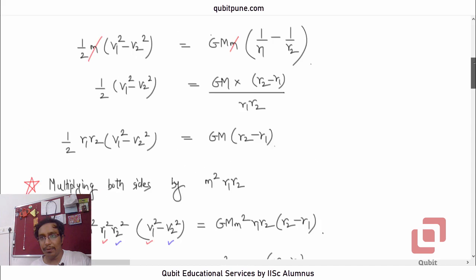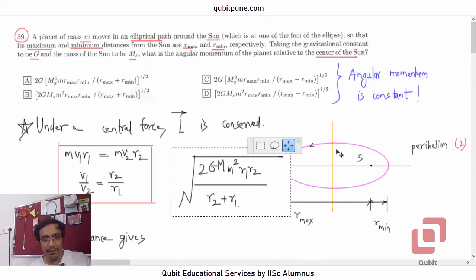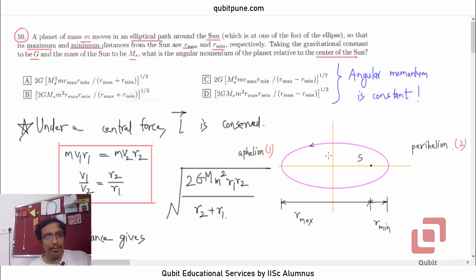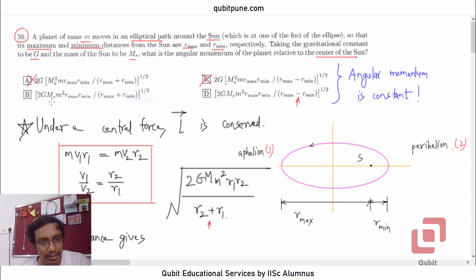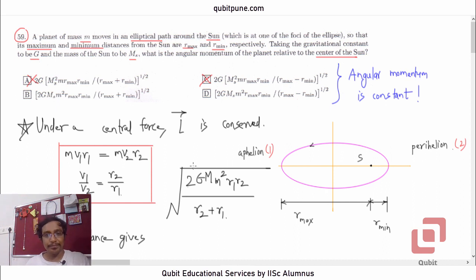Let's go back to the options and tally this with our answer. Options A and C are not right because G is outside the square root there. So it is either B or D. D is not right because it has a negative sign where we have a positive sign. So the correct option is B: √(2·G·M_s·m²·R_max·R_min / (R_max + R_min)).